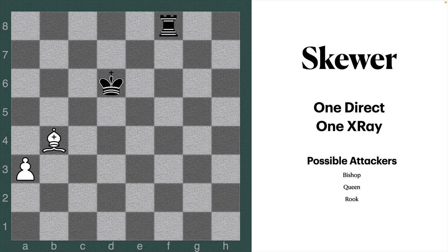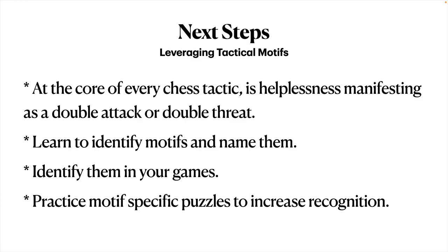If I swap the king and rook's positions, it turns into a skewer. A pin and a skewer are absolutely similar in terms of the number and type of pieces involved. However, in a skewer the direct attack is on the piece with the higher value, whereas in a pin the direct attack is on the piece with the lower value. That's the key difference between the two.